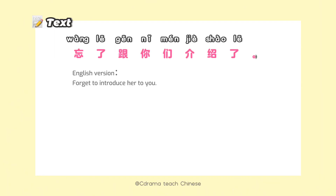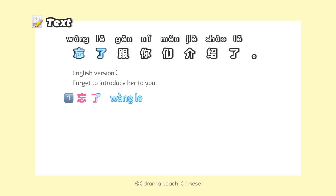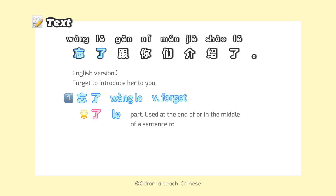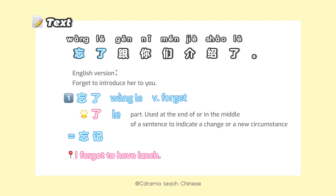忘了 means forget. 忘了 is very commonly used — it's used at the end of or in the middle of a sentence to indicate a change or a new circumstance. Another way to say 忘了 is 忘记. For example, 'I forgot to have lunch' in Chinese: 我忘了吃午饭了, or 我忘记吃午饭了.